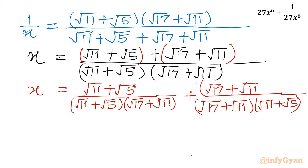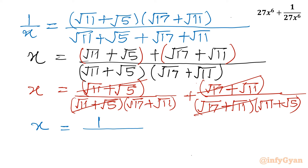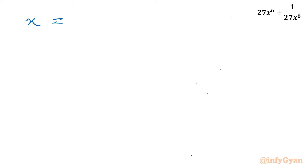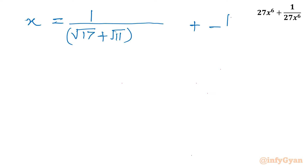Now I will cancel whatever we can. These two brackets here I will be cancelling, and here also we will cancel these two brackets. What is left: x equals 1 over (root 17 plus root 11) plus 1 over (root 11 plus root 5).